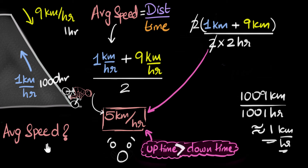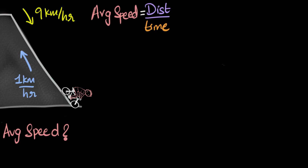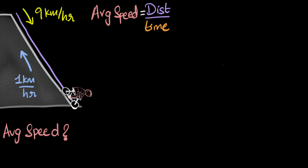Now that we understand what not to do, let's go ahead and solve this using the formula. Distance is not given and time is not given — but we can always assume. So let's assume the distance the biker boy travels up the mountain is D. Then the total distance he travels is D going up and D coming back down, so the total distance is 2D.